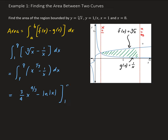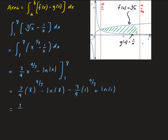We evaluate this from 1 to 8. That gives us 3/4 times 8 to the 4/3 minus natural log of 8, minus 3/4 times 1 to the 4/3, plus natural log of 1. Now, 8 to the 4/3 means we take the cube root of 8, which is 2, then raise it to the 4th power to get 16. So we have 3/4 times 16 minus natural log of 8. Then 1 to the 4/3 is just 1, giving minus 3/4, and natural log of 1 equals 0.